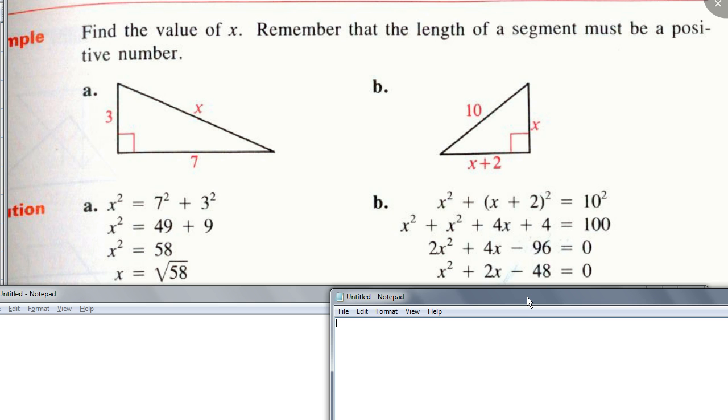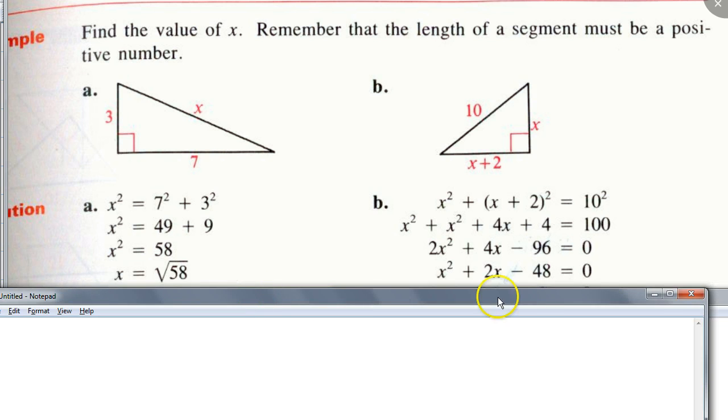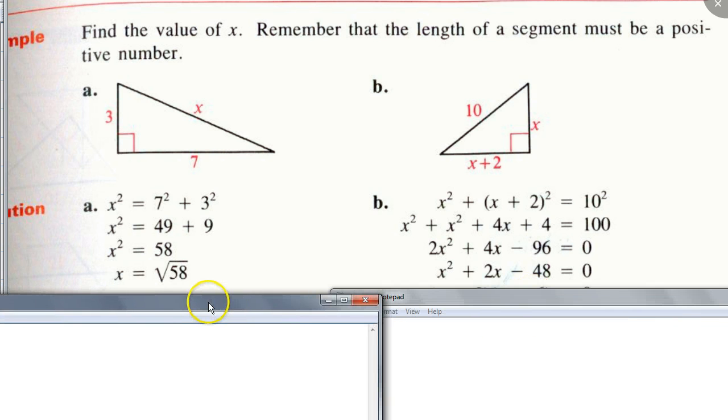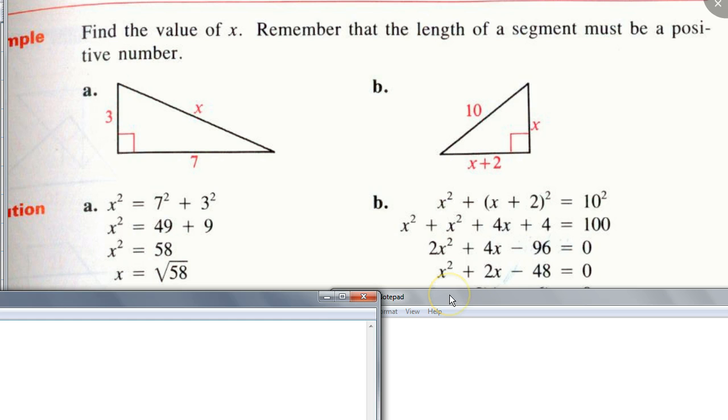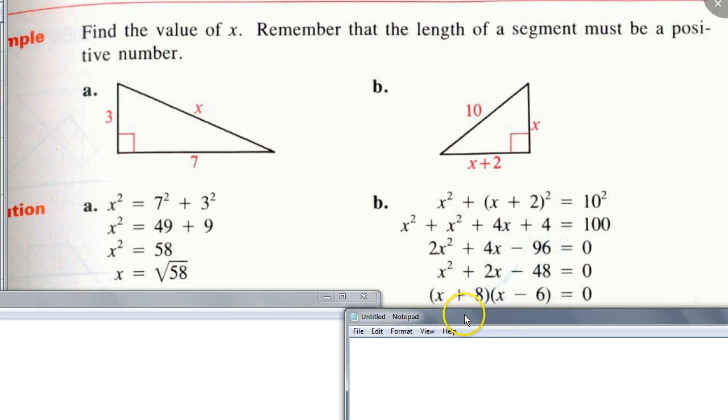Then you could either factor or use pathogen, I mean use quadratic formula and so forth. But this factors, doesn't it? It's easier to factor. What's it factor to? How about, Joseph? It's like X plus 8 and X minus 6. You got it.